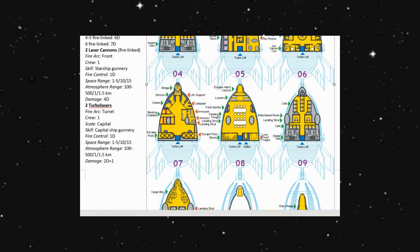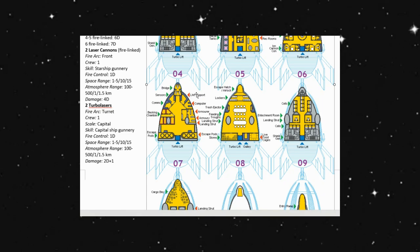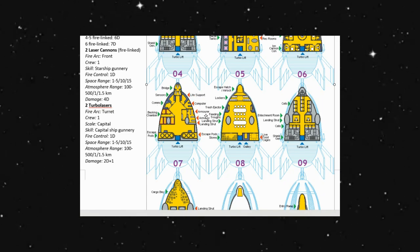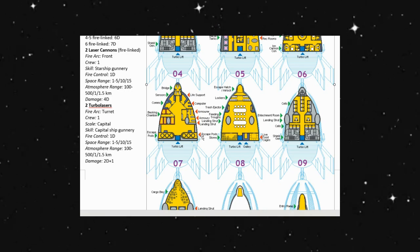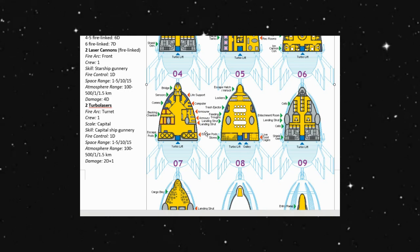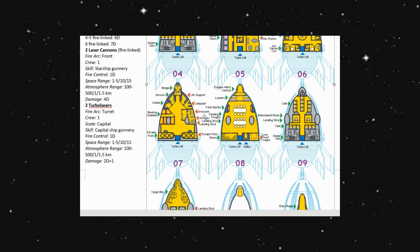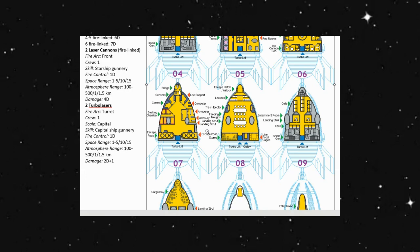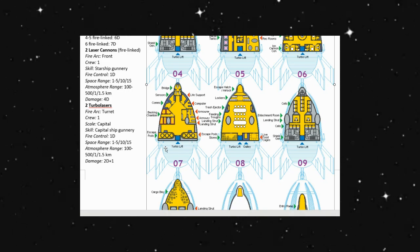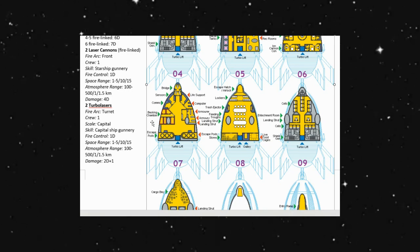We do have a library, a hygiene area, ion cannon controls. Level seven here. We have our bridge. We have our sensors. Life support. Coms. Computers. Armorer. Armorer landing. Or armor and armory. I'm mixing the landing strut for eight here. And then we have a landing strut starting here on level seven. We have escape pods here. Escape pods on the other side, as well as basking chamber. Must be something to do with the species that are doing this.